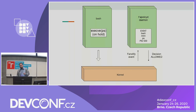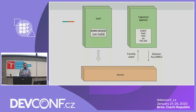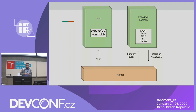FAPOLICYD daemon has to decide what to do with it. There are two possible resolutions: allowed or denied. If it is allowed, execv will continue and eventually end with success. But if it is denied and the FAPOLICYD daemon sends a deny response, then execv will fail and the PS command won't be executed.